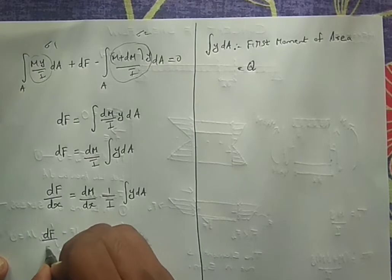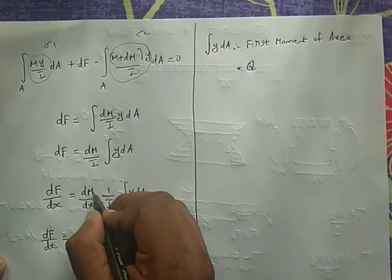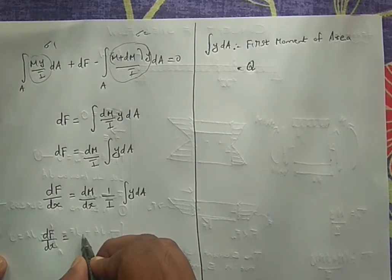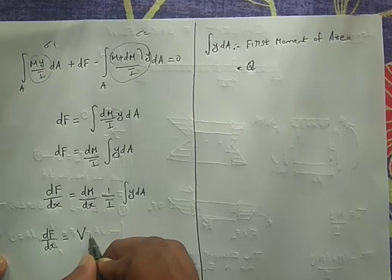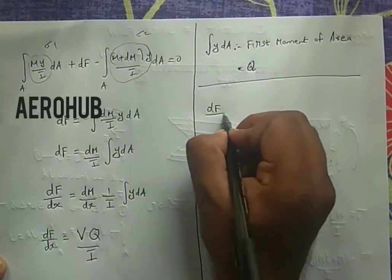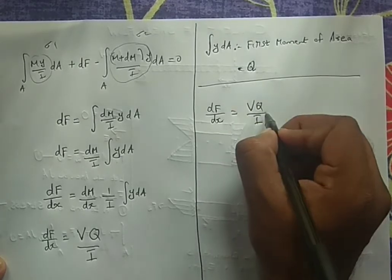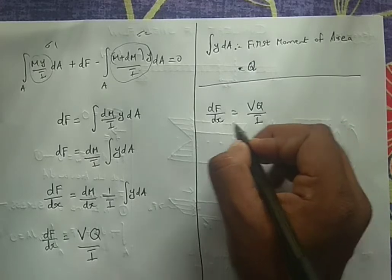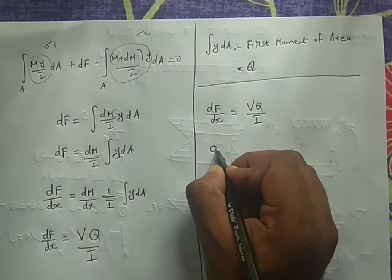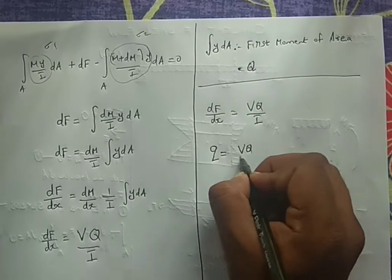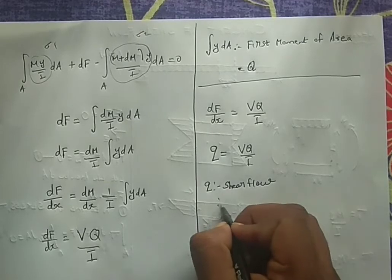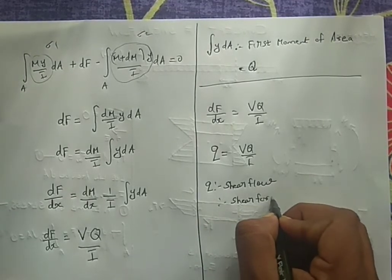Substituting, dF/dx = V·Q / I, where V is the shear force, Q is the first moment of area, and I is the moment of inertia. dF/dx is the shear force per unit length, which is the shear flow. The shear flow is denoted by lowercase q. So q = VQ / I. We also have the formula for shear stress: τ = VQ / (I·T), where T is the thickness. From these two, q = τ·T, confirming that shear flow equals shear stress times thickness.